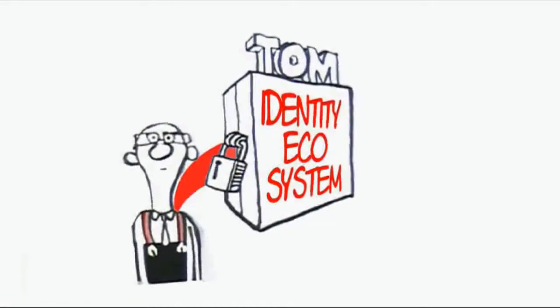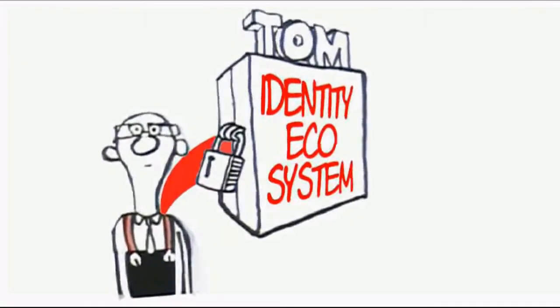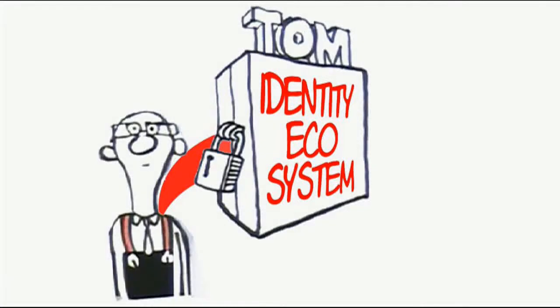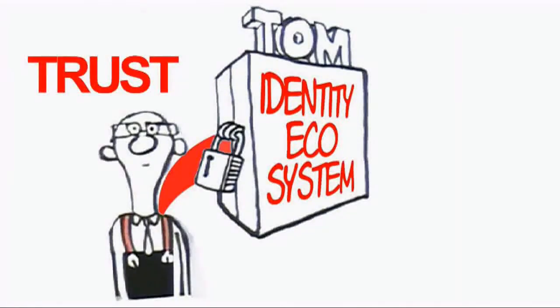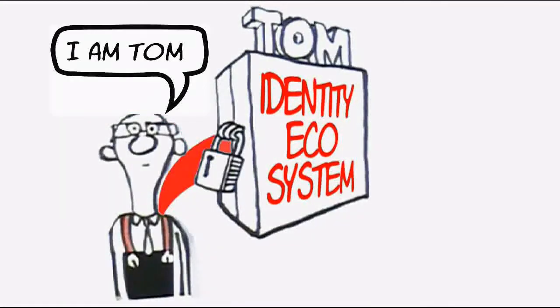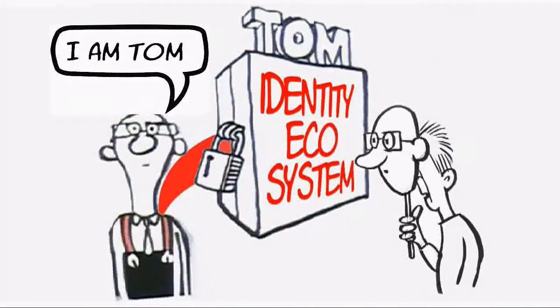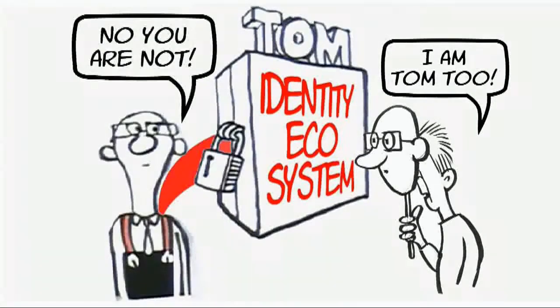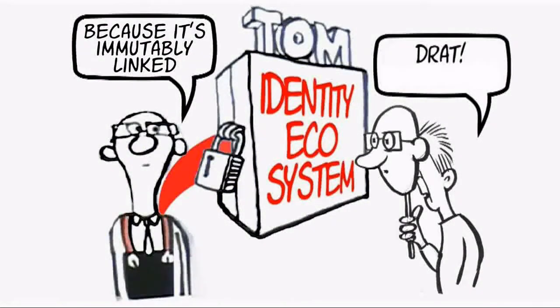Key to the trust in this whole ecosystem is the ability to immutably, in other words enduringly and changelessly, link an entity to a digital core identifier so Tom can prove that Tom is Tom in the knowledge that no one can impersonate Tom, not even with his permission.